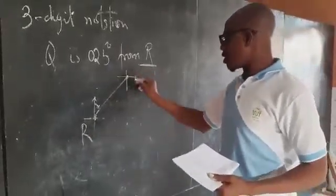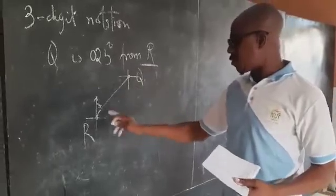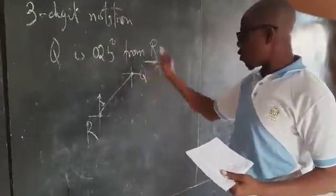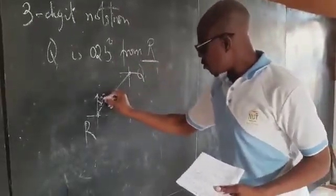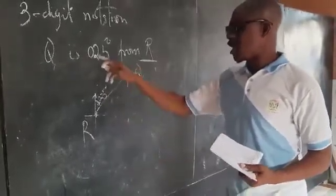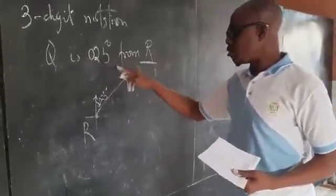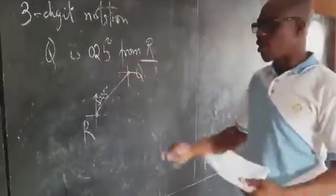This is R. Now this is our Q, that is 25 degrees from R. Zero two five degrees. See, three digits now. And so on and so forth.